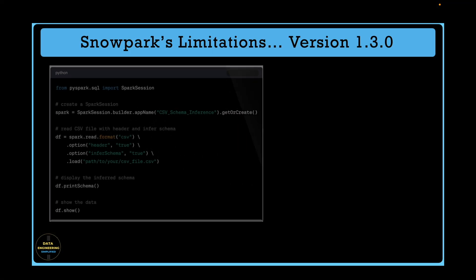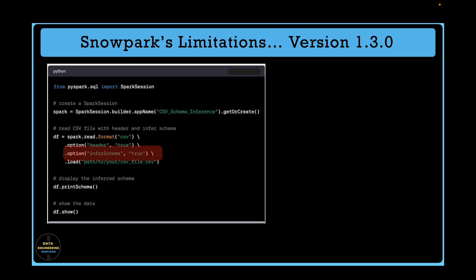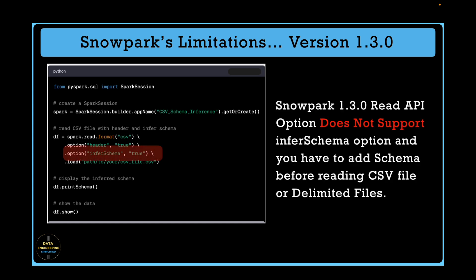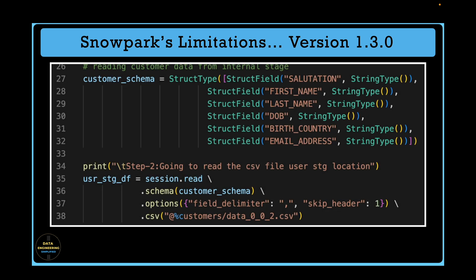Snowpark 1.3.0 read API options do not support the infer schema option, and you have to add the schema manually before reading a CSV or delimited file. Snowflake may add this feature in future releases, but for other file formats like Parquet and Avro, schema is already attached with the data, so it's not an issue when considering Snowpark for reading those files.